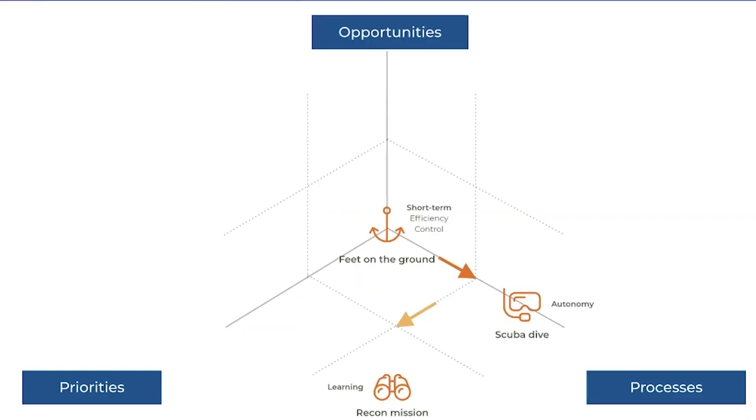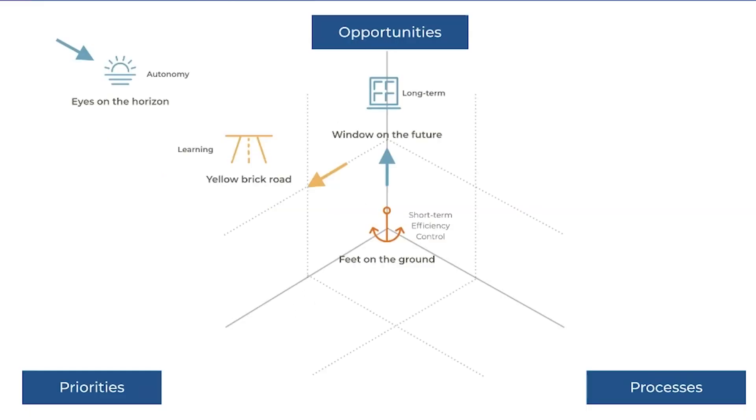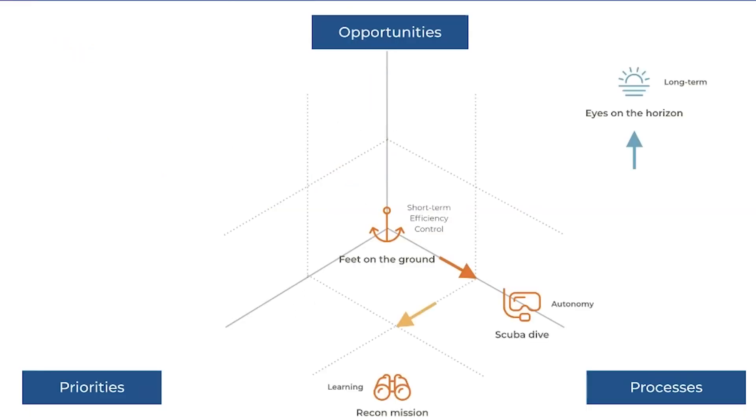Of course, the move from having open autonomy and then trying to think long term while keeping a focus on efficiency metrics is again a familiar fallacy. Now we can let autonomy in, and this takes us to eyes on the horizon. This is really future-focused thinking in a very open way, where we're there to learn and explore in unconstrained ways. We can of course get to that through the other pathway as well: scuba dive, opening autonomy, a recon mission with learning, and then we open up longer-term thinking.